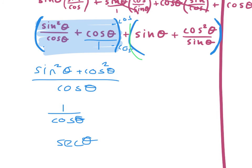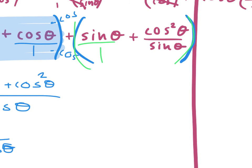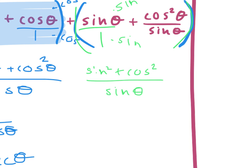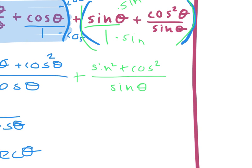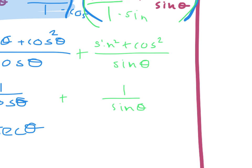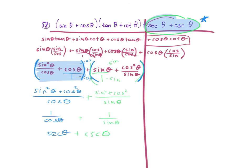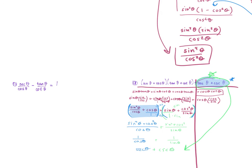Now for the second group: sine θ plus cosine² over sine θ. Multiply the first term by sine/sine to get a common denominator of sine. The numerator becomes sine² θ plus cosine² θ, over sine. That's 1 over sine θ, which is cosecant θ. So we get secant θ plus cosecant θ, which is what we were trying to get.